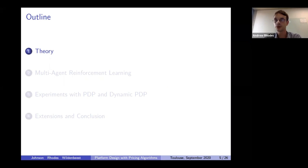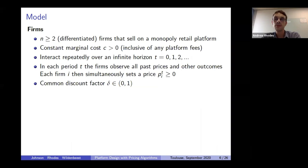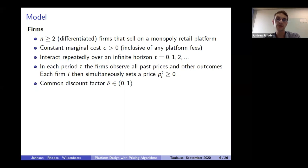Let me move to the theory part of the paper. This is a simple game between n ≥ 2 firms that sell differentiated products at a common constant marginal cost C. These firms interact repeatedly over an infinite horizon on a monopoly retail platform. In each period T, the firms observe all past prices and other market outcomes, including the result of any platform intervention. Then they simultaneously set a price for that period. Firms have a common discount factor delta strictly between zero and one.